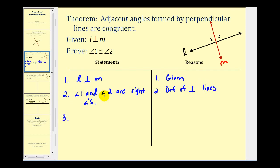And if angle 1 and angle 2 are right angles, we know the measure of angle 1 equals 90 degrees and the measure of angle 2 is equal to 90 degrees. And this is by definition of right angles.